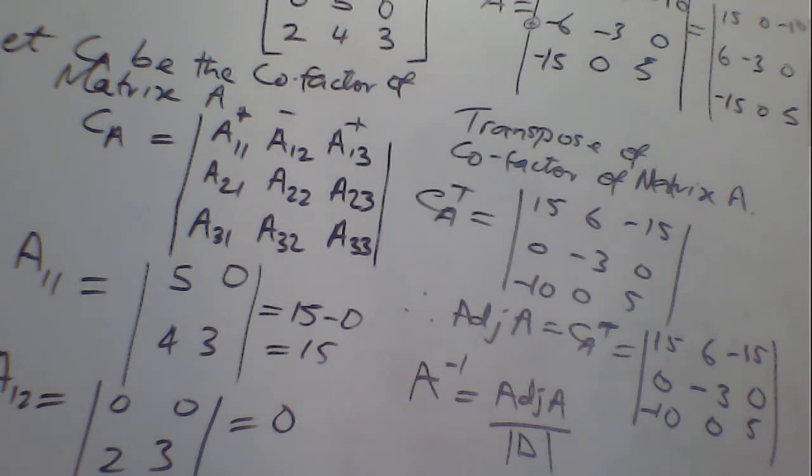So this is how you can find the inverse of matrix A. Once you have gotten the adjoint, you now have to find the determinant. You know how to get the determinant. Once you get the determinant, then multiply the inverse of the determinant to the adjoint A. You will now have the inverse of matrix A. You have any question?